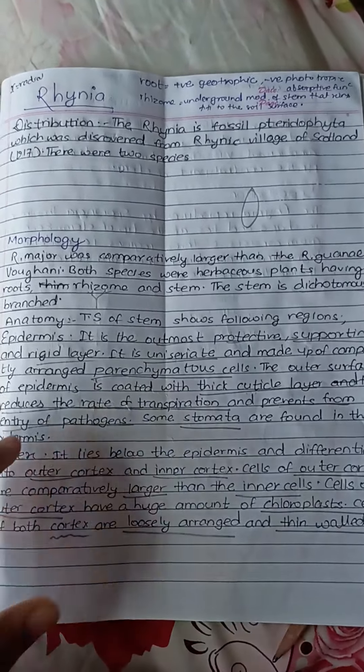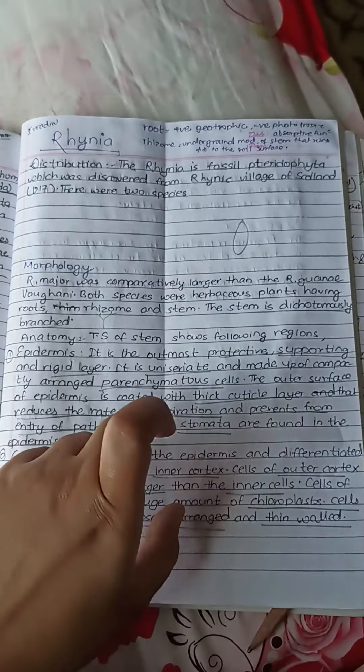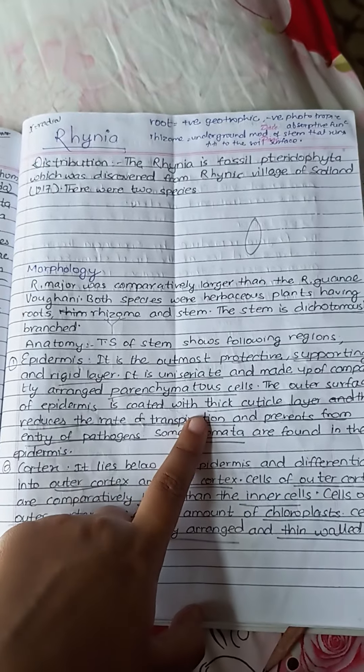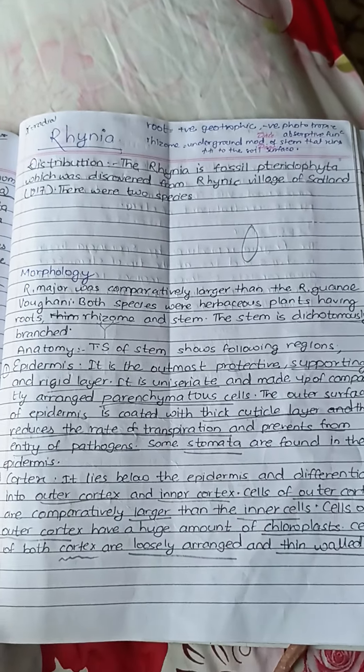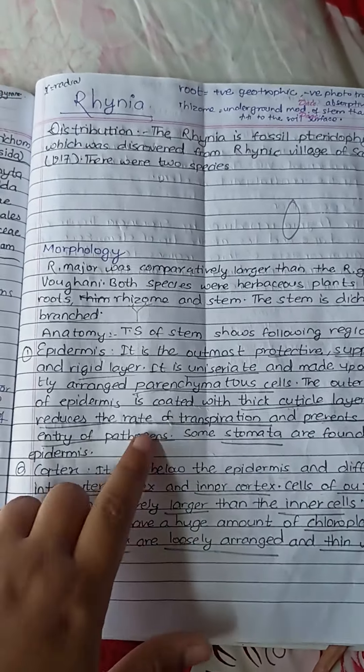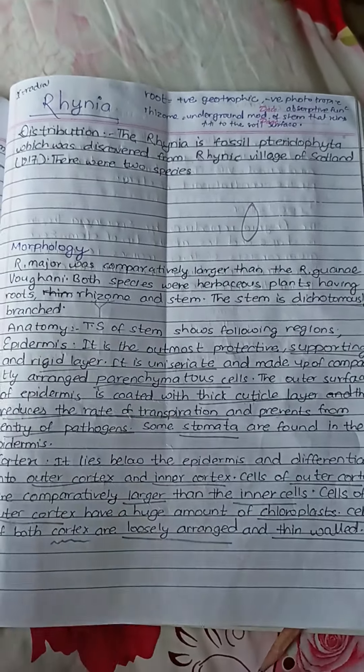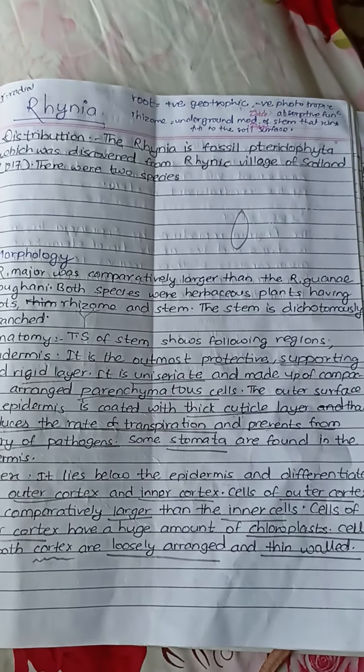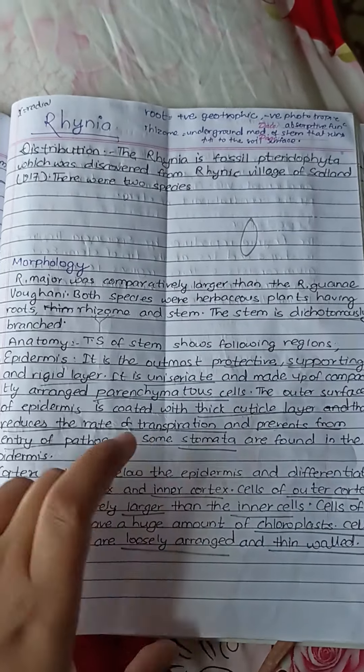It is compactly arranged, uniseriate, and as I said, it is parenchymatous cell. By the outer surface of epidermis is a thick cuticle layer. It is a cuticle layer. Transpiration rate is reduced and we can prevent pathogens.